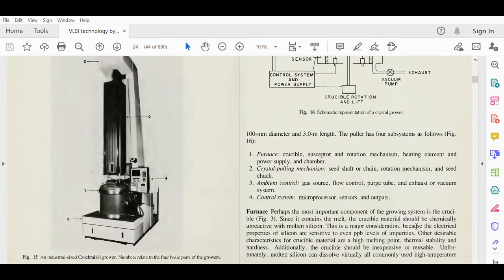This is a major consideration because the electrical properties of silicon are sensitive to even ppb levels, part per billion levels. Even one impurity out of one billion can trigger the electrical property of silicon. This is the sensitivity level. It is very important to consider the crucible material design.